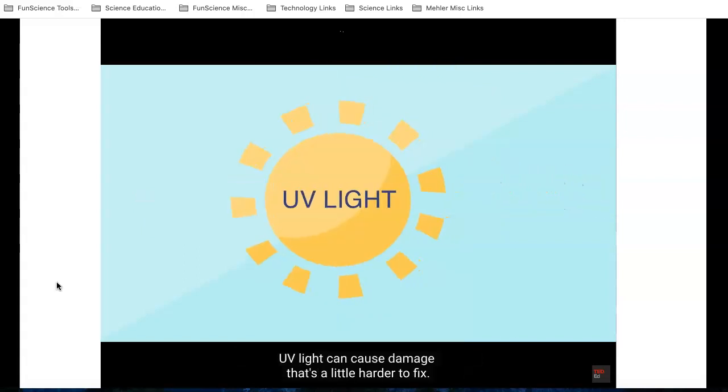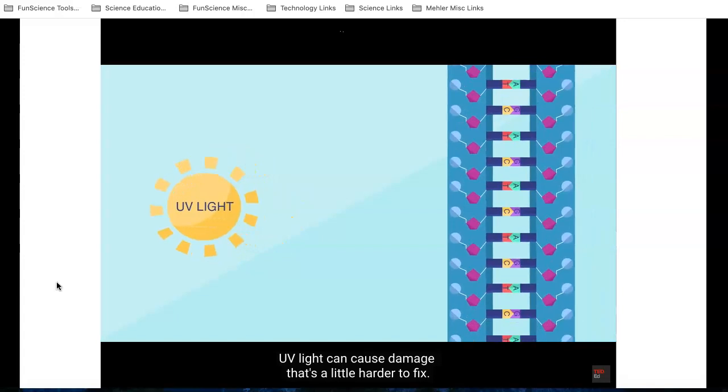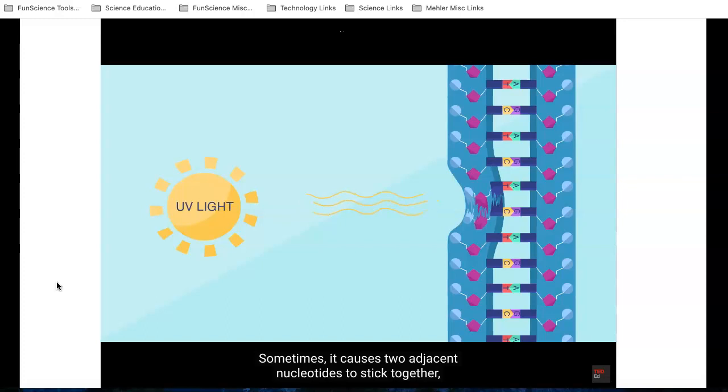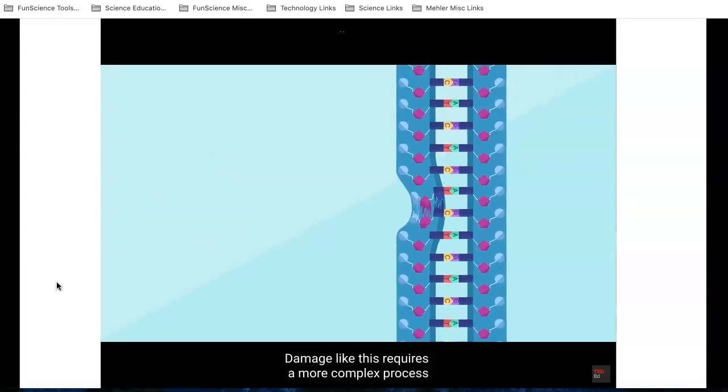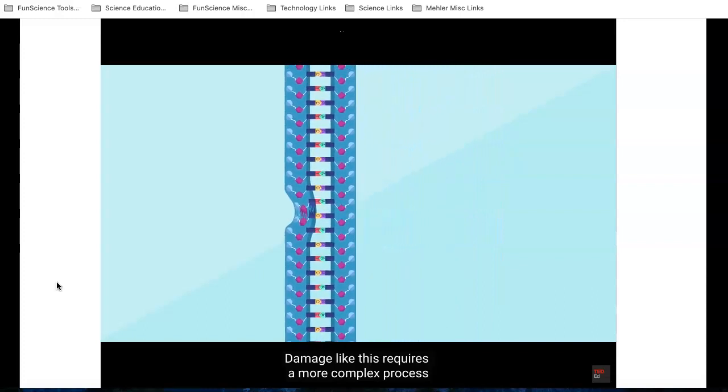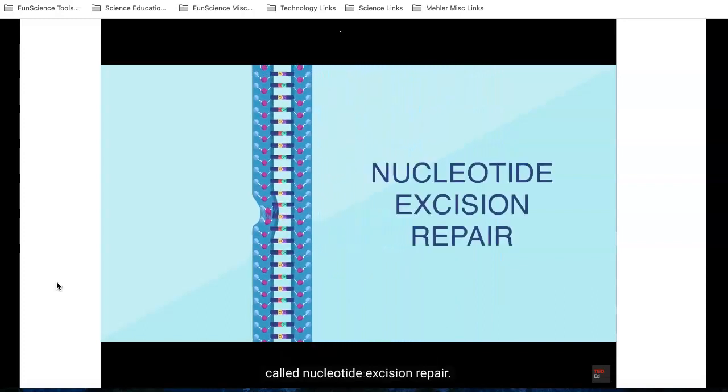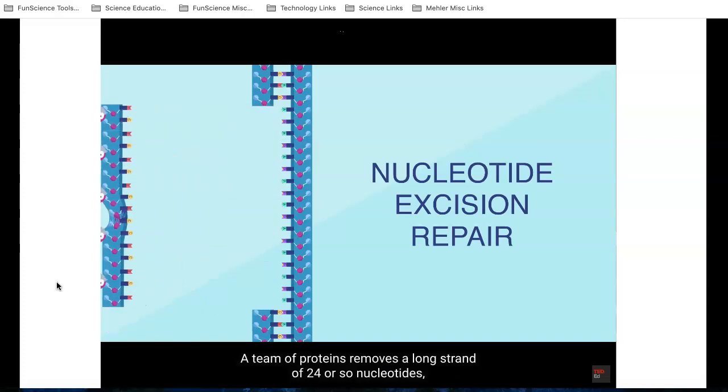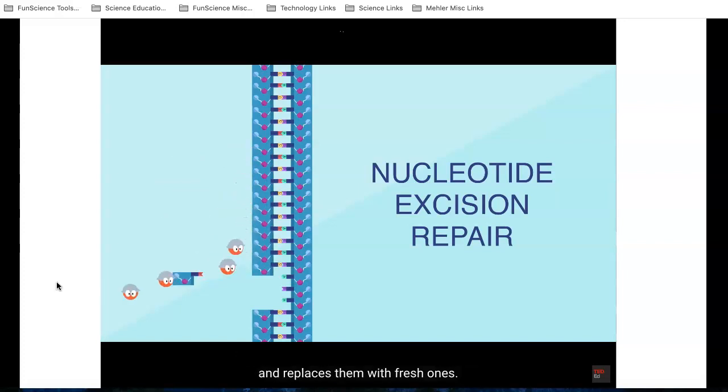UV light can cause damage that's a little harder to fix. Sometimes it causes two adjacent nucleotides to stick together, distorting the DNA's double helix shape. Damage like this requires a more complex process called nucleotide excision repair. A team of proteins removes a long strand of 24 or so nucleotides and replaces them with fresh ones.